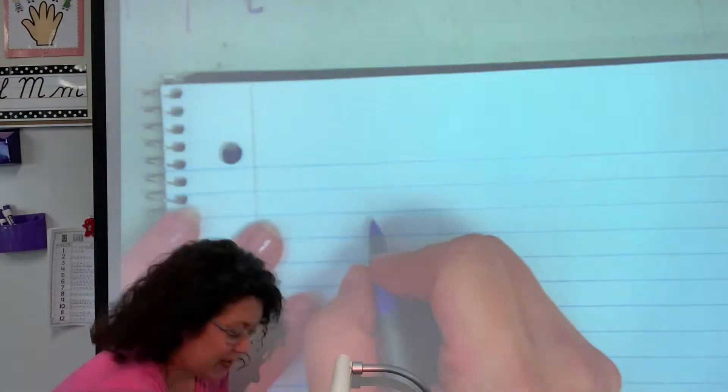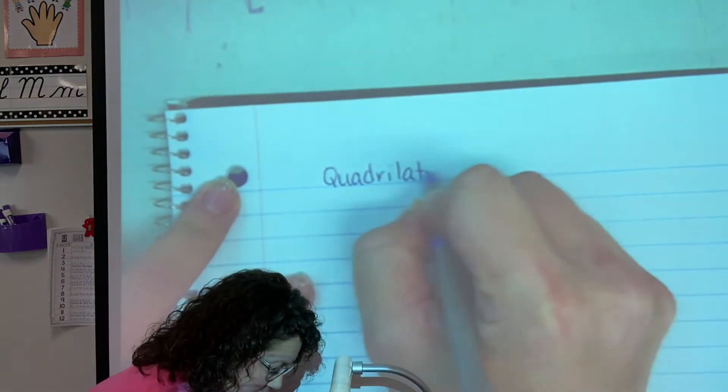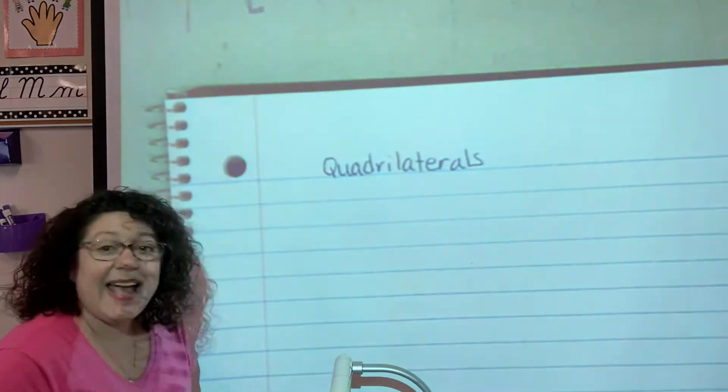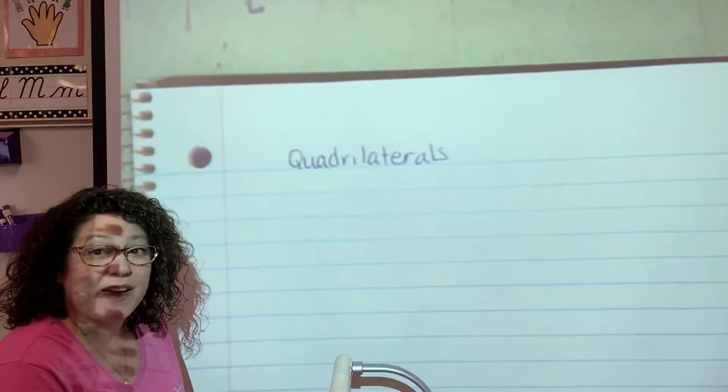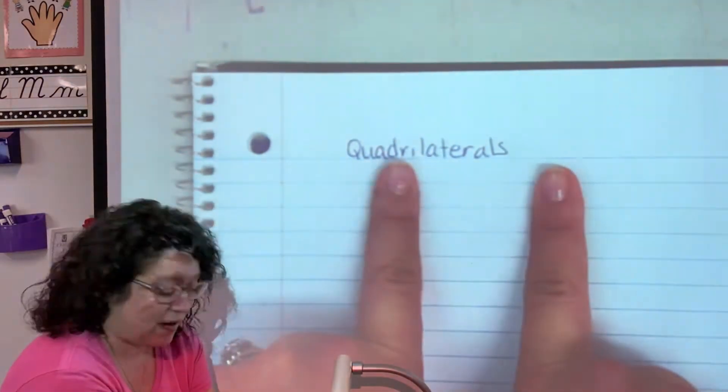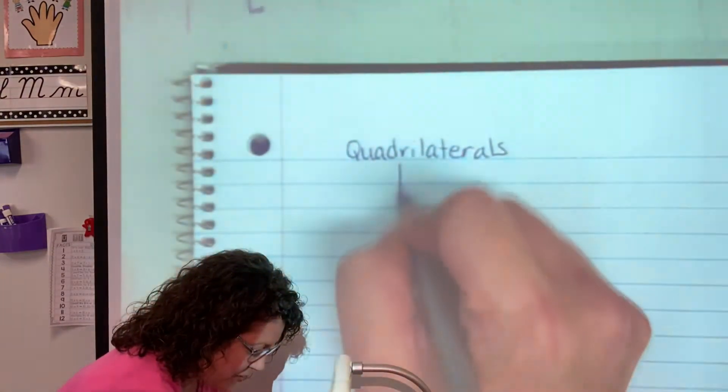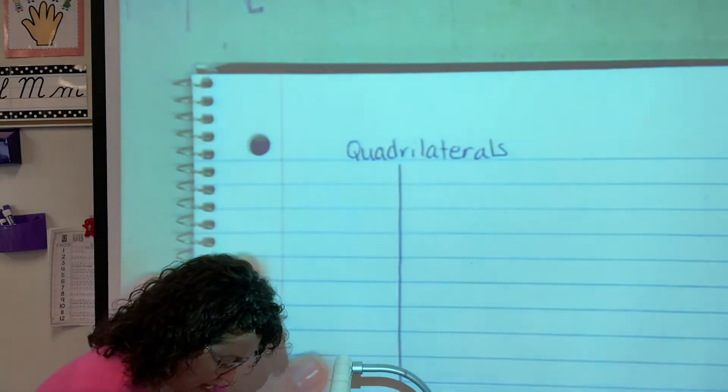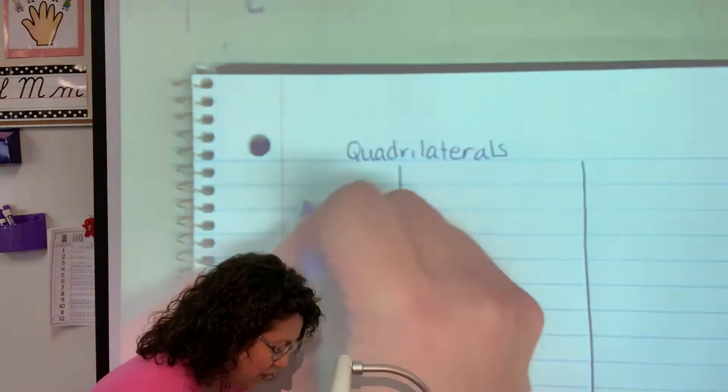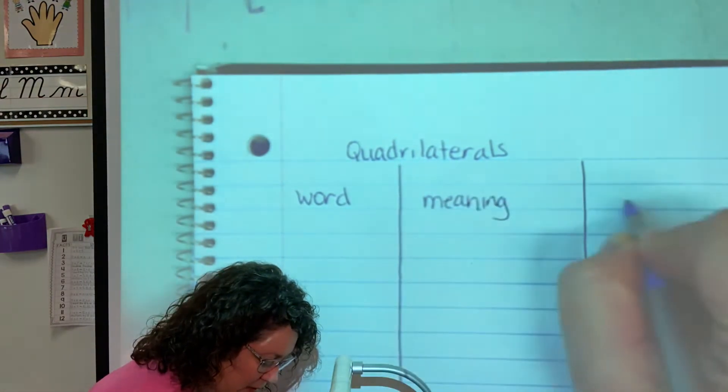Okay, so we're going to give it our title: Quadrilaterals. It's a long word. And we're going to make our three column chart that hopefully we're getting pretty good at doing. Remember how we do that? We use our finger spacers to make sure that our columns are about equal. I'm going to go straight down, nice and slow, so my line doesn't get wonky at the bottom. There we go. Word, meaning, example.